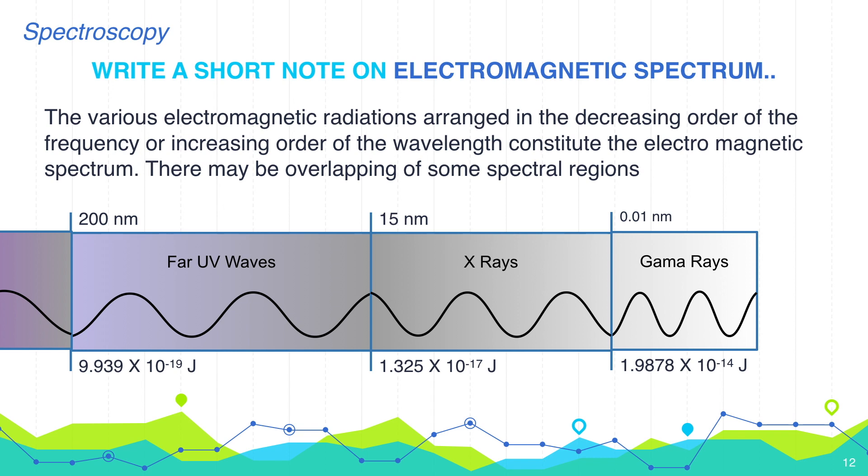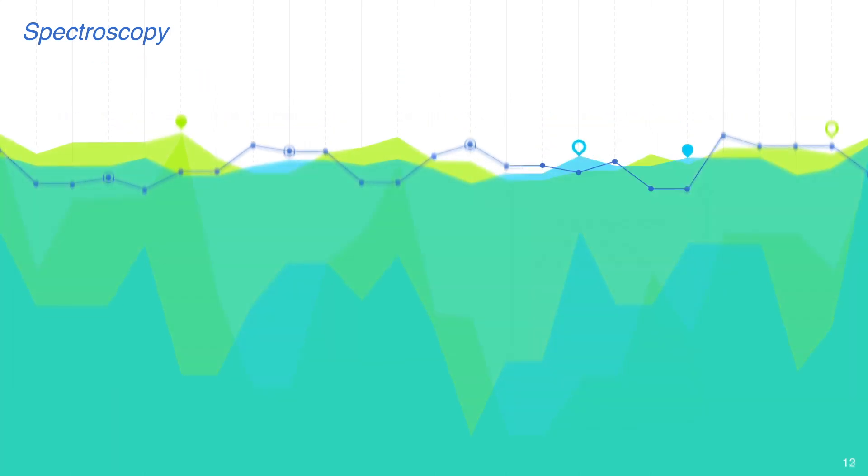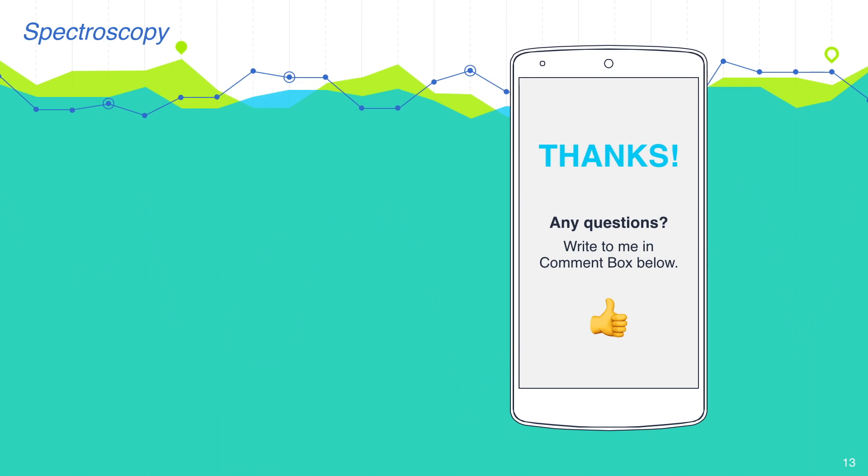And finally, the highest energy is with gamma rays which is considered fatal radiation because this high energy radiation can rupture the body cells and cause death of cells. So, that was all about the electromagnetic radiation.